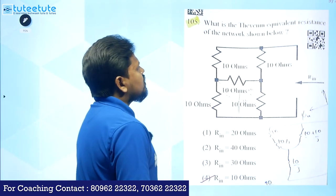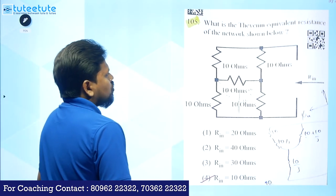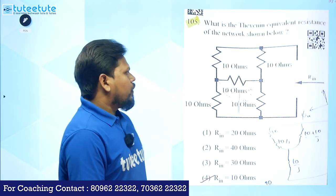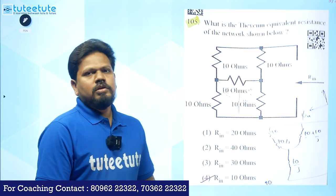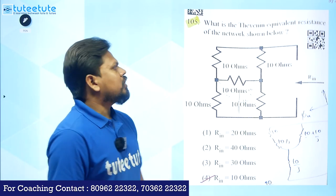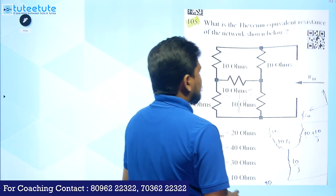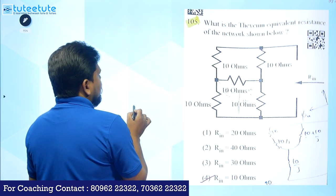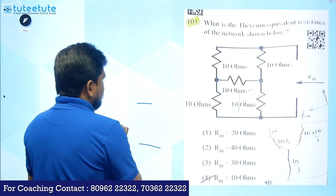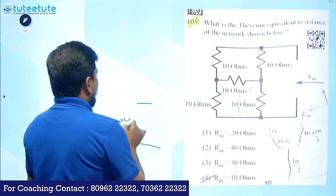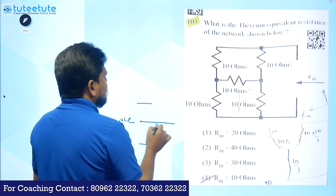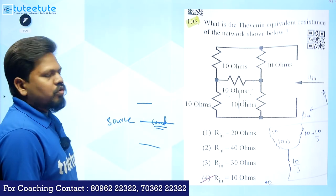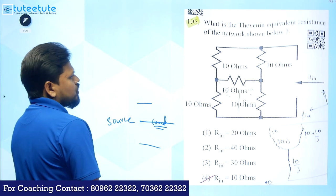Next question: what is the Thevenin's equivalent resistance of the network shown? When you see a bridge network — five resistances where a source is connected between two nodes and a load is connected between the other two nodes — you need to check whether it is a balanced or unbalanced bridge.